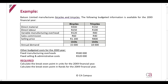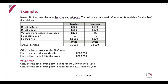The following budgeted information is available for the 20x9 financial year. As we work through the information, identify which costs are fixed, which are variable, and which are semi-variable. Before we can perform any calculations, if there are any semi-variable costs, we need to split those into their fixed and variable portions. We can't work with semi-variable costs.